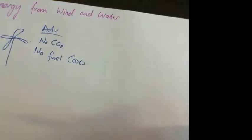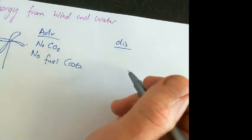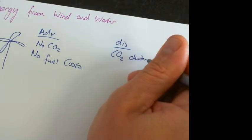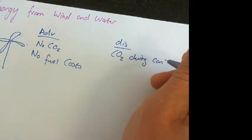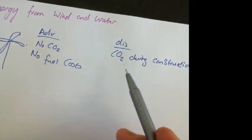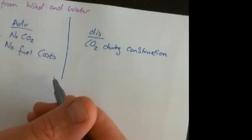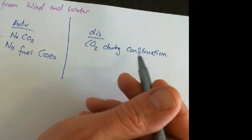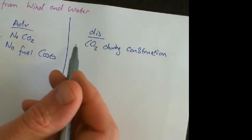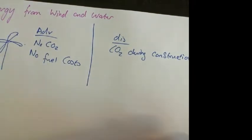But there are problems with it. So the disadvantages are CO2 during construction. So if you make a wind turbine, you have to use up a certain amount of CO2 in order to make it. So it will take so many years before that wind turbine has paid back the amount of CO2 that was used in making it so that it's saved from not burning another fuel. So that's something you've got to take into account.